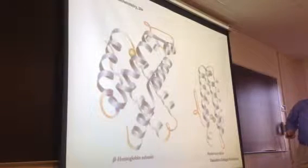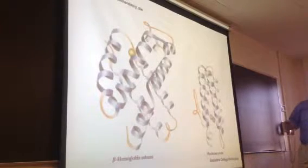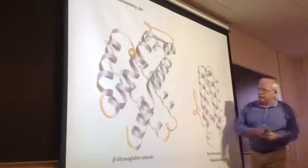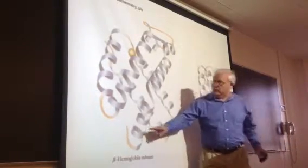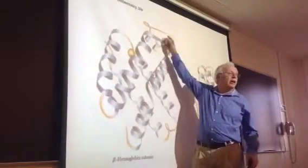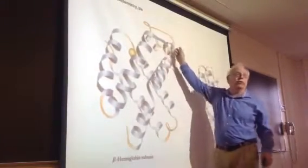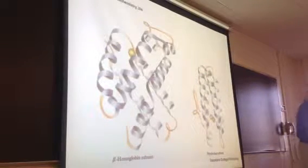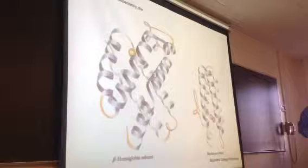And this is a hemoglobin subunit, almost all alpha helix. This part in gold is not alpha helix, it's some turns and connectors that have some so-called random coil structure. But it must be 80-90% alpha helix. So some proteins, that's all they're made of.